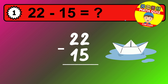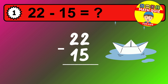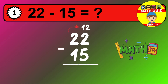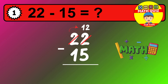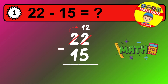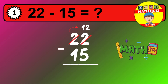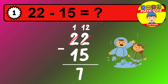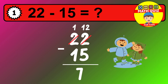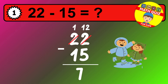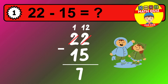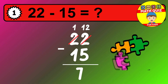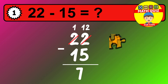Let's solve this step by step. We start with the units. 2 minus 5 is not possible, so we need to regroup. We take one 10 from the tens column. Now we have one ten, and the units become 12. Now we subtract. 12 minus 5 is 7. Then we go to the tens. 1 minus 1 is 0. The final answer is 7.